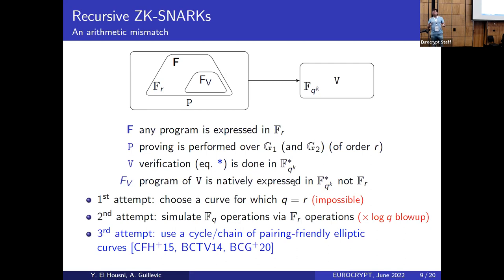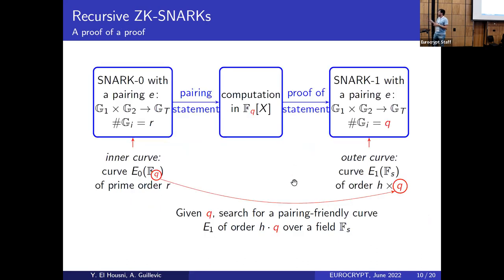The problem is you need to express the pairing computation as an arithmetic circuit in F_r, but the pairing computation lives in F_q or F_{q^k}. One first attempt would be to find a curve where q equals r, but those curves are cryptographically broken. A second attempt is to emulate F_q operations inside F_r, but this results in huge overhead. The third approach is to change the elliptic curves for the recursive proof — avoiding the arithmetic mismatch — which leads to chains or cycles of elliptic curves.